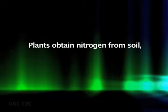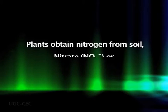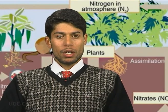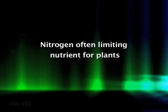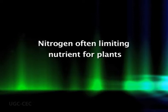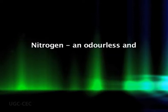Most plants obtain the bulk of their nitrogen from the soil in the form of either nitrate or ammonia, but the supply of nitrogen in the soil pool is limited and plants must compete with a variety of soil microorganisms for available nitrogen. As a result, nitrogen is often a limiting nutrient for plants in both natural and agricultural ecosystems.